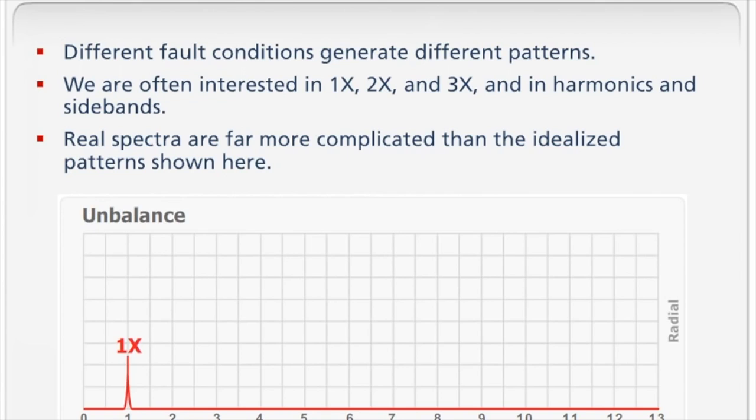But if I do have unbalance, the 1x peak goes up. If there's resonance, it amplifies the vibration, and we tend to see the base of the peak sort of broaden out.